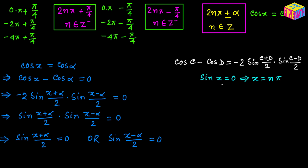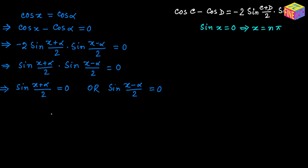From the first factor, we can say x plus alpha over 2 equals n times pi, where n is an integer. From here it follows that x plus alpha equals 2n times pi.